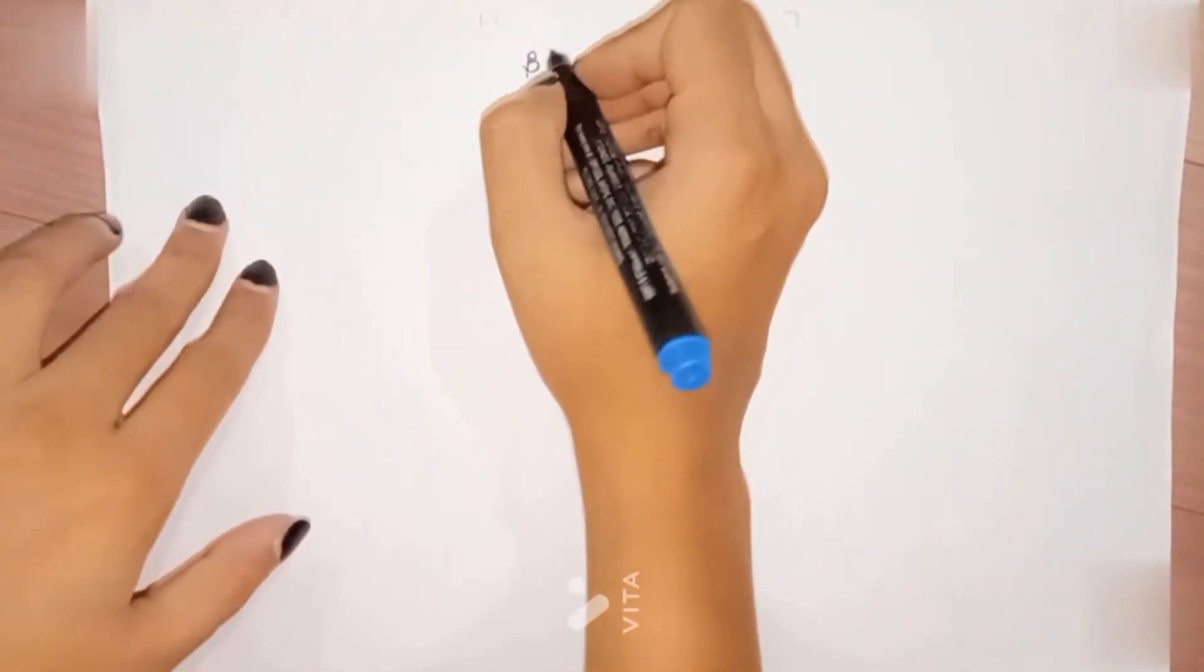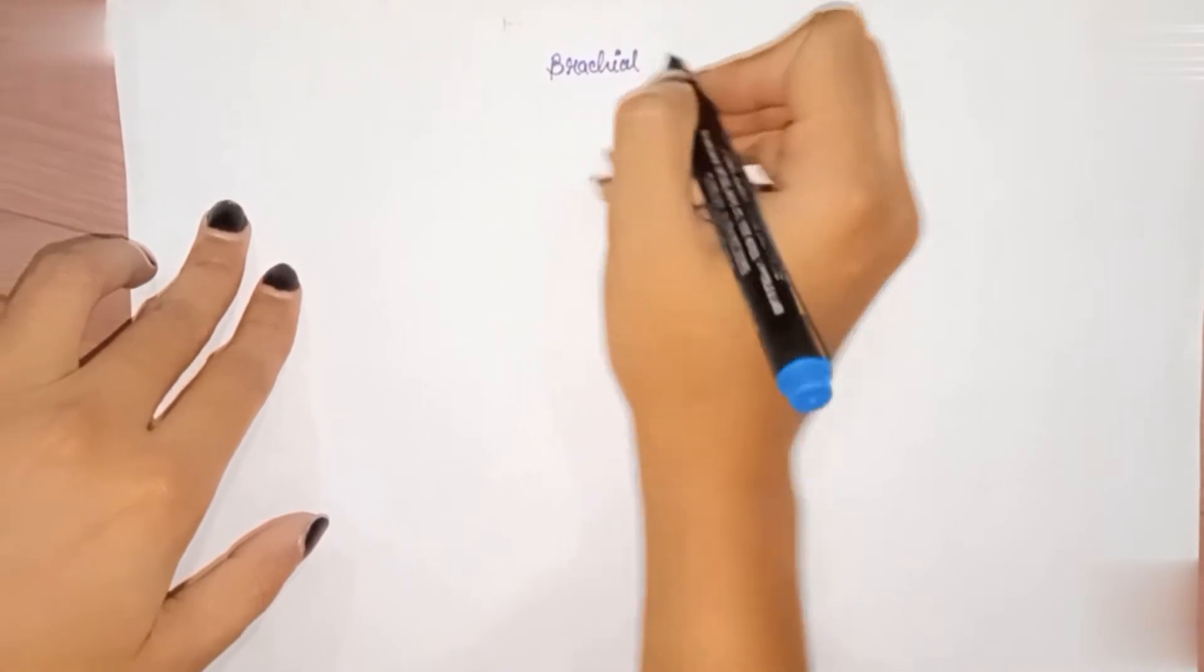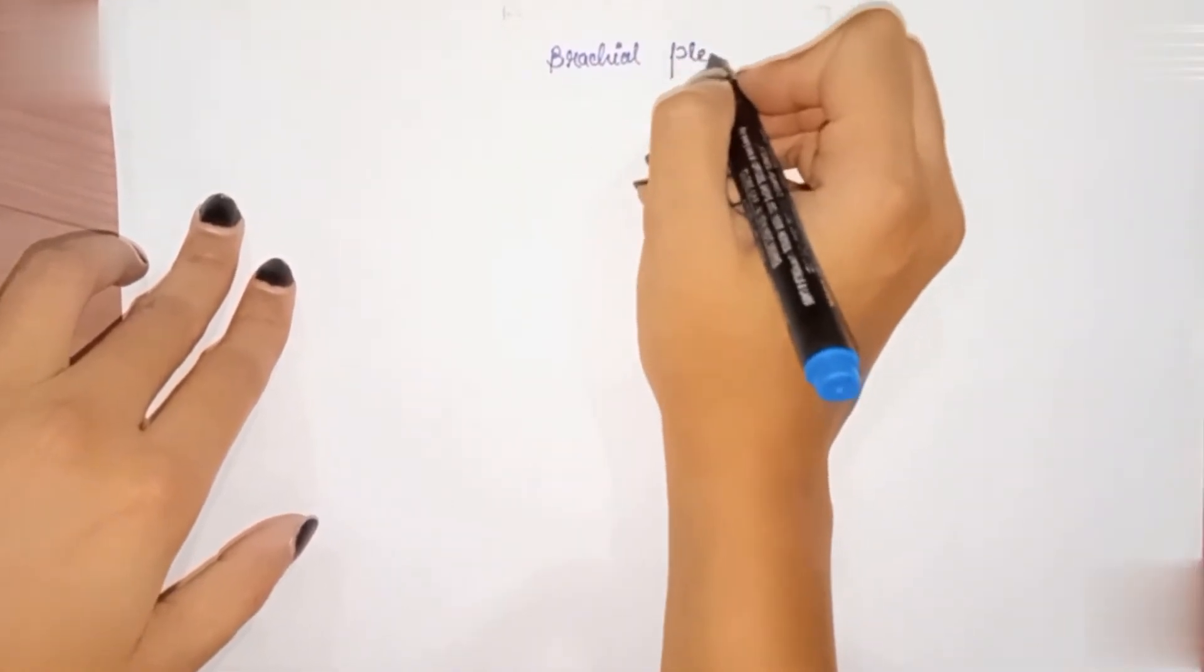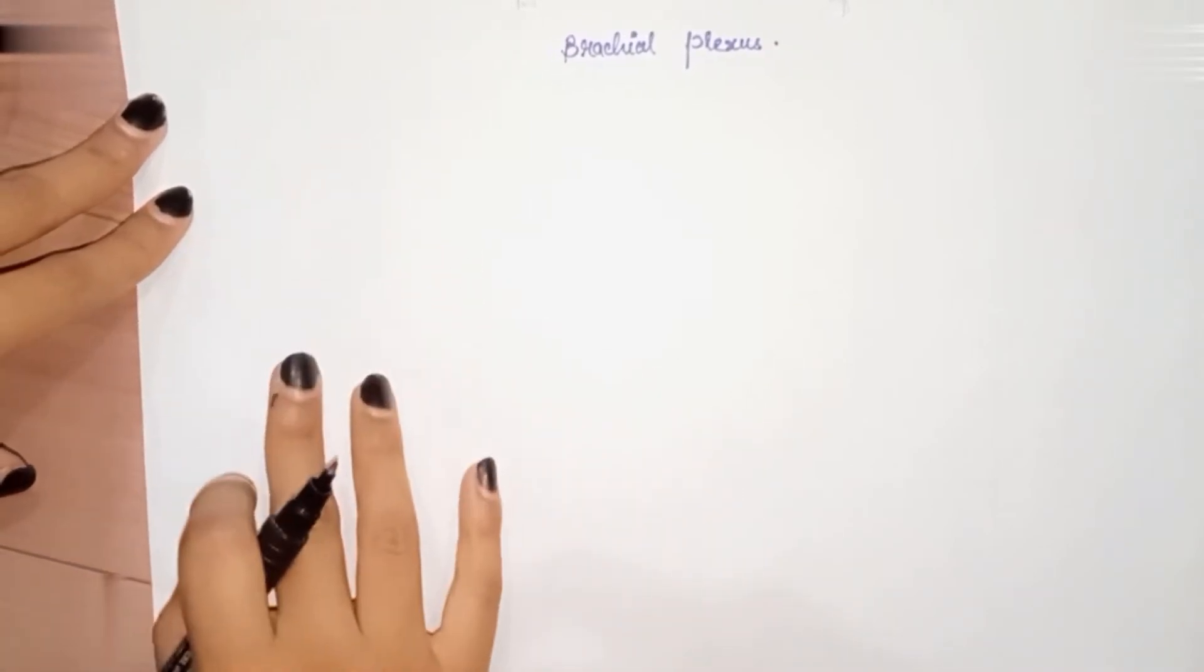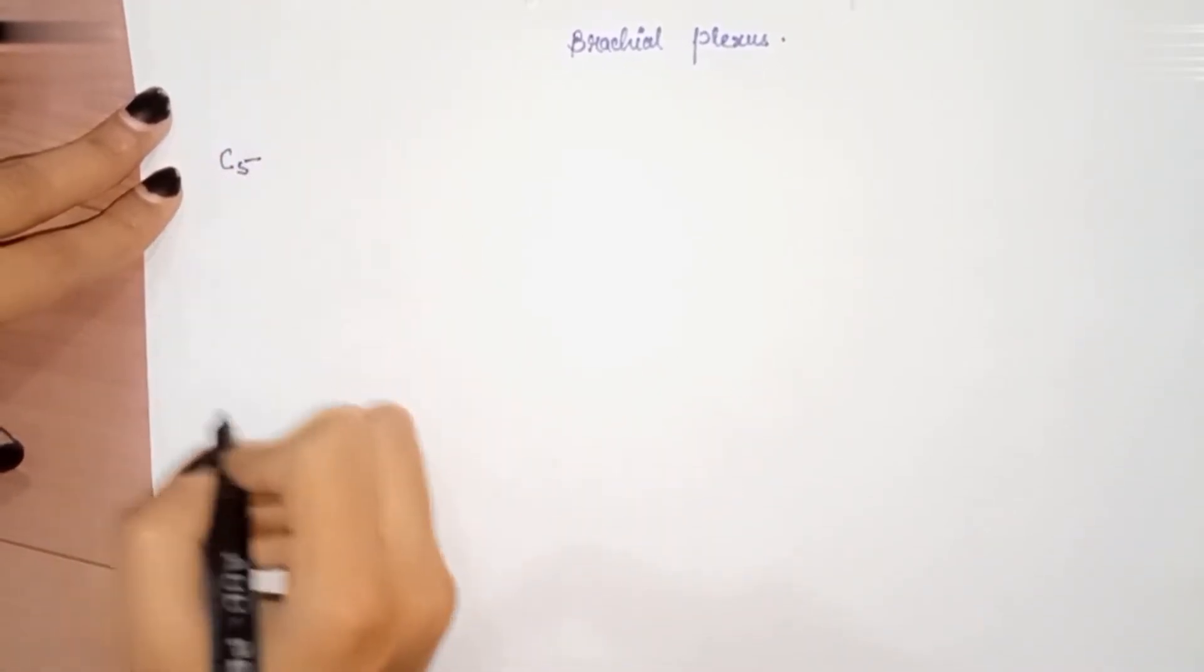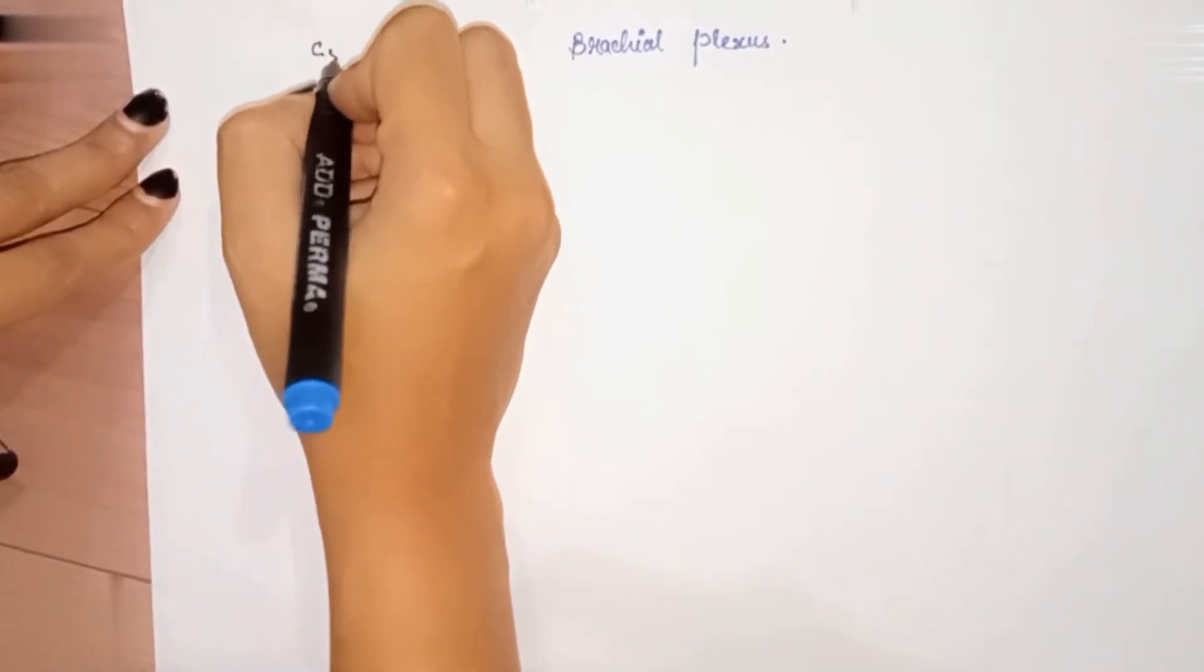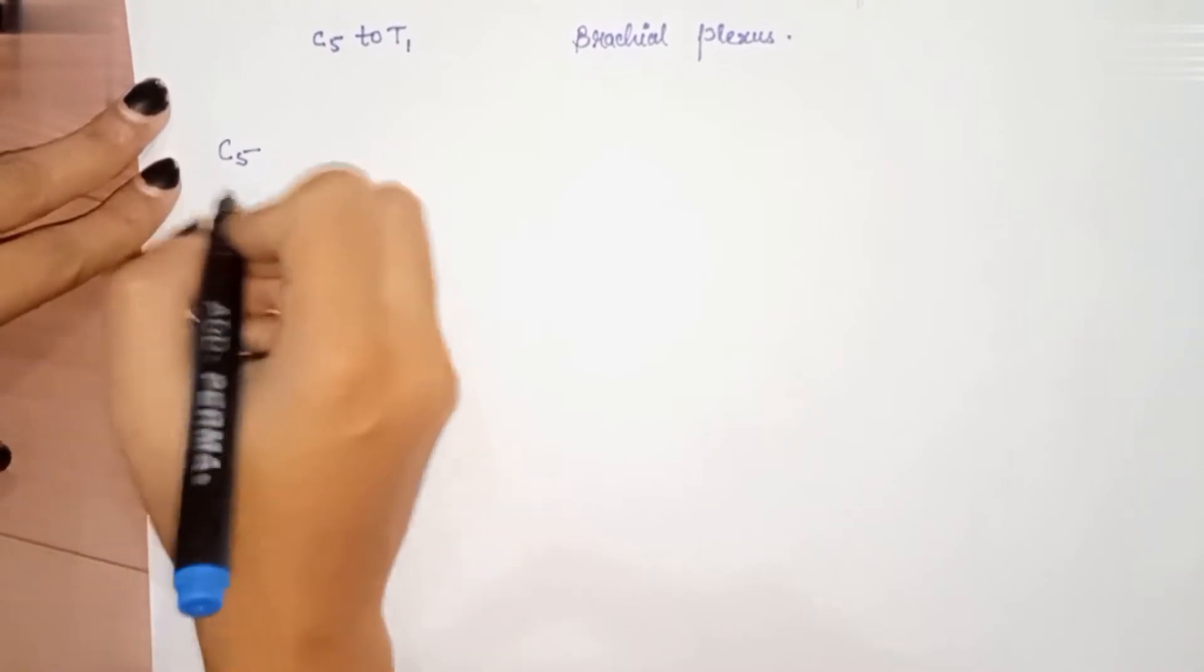Today I will show you the easiest way to draw the brachial plexus. As you all know, there are roots from C5 to T1, so I'm just writing all of them: C5 to T1. I will line them up one by one.